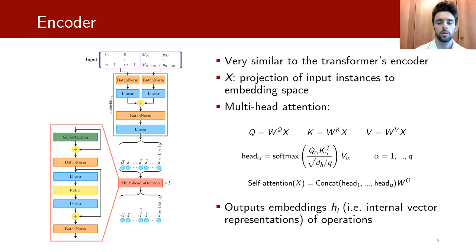The encoder of the attention model is very similar to the transformers. Its first part projects the input into a first embedding representation. Then, this matrix X is fed through L multi-attention layers, and this results in the final embedding representation of each operation.